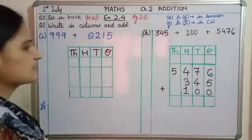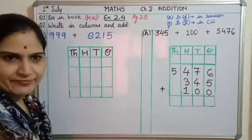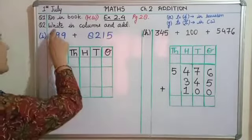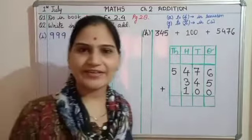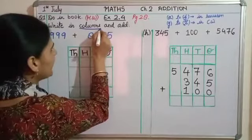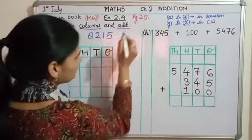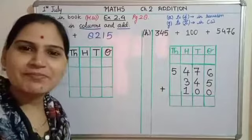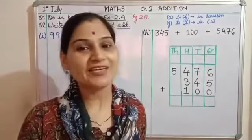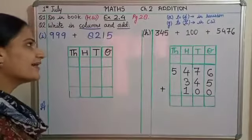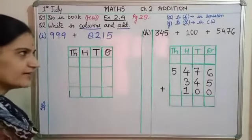Next 6 parts g, h, i, j, k, l - these we will do in the classwork notebook. From those 6 parts I have selected 2 questions. The question is: write in columns and add. We are going to do this in the notebook. So let us see what the question is asking. Write in columns - you have to write something in columns, and then you have to do the addition.